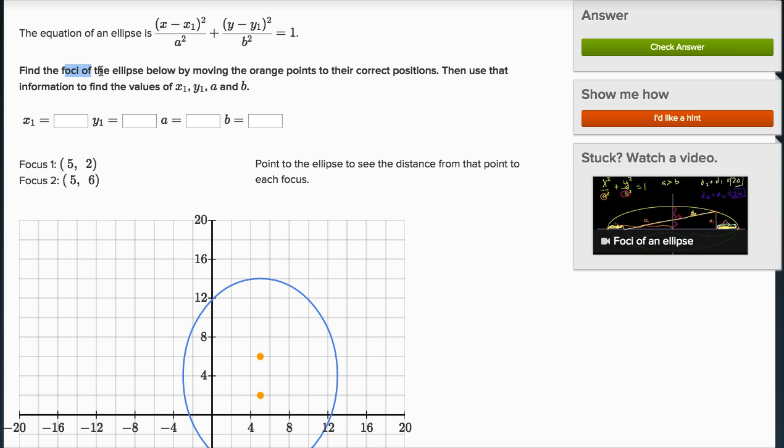So then they say find the foci of the ellipse below by moving the orange points to their correct positions. Then use that information to find the values of x1, y1, a, and b. So they want us to move these to the correct position. The correct position is where the sum of the distances, so if we move it to the correct position, the sum of the length of that red line and the length of that green line should be constant.